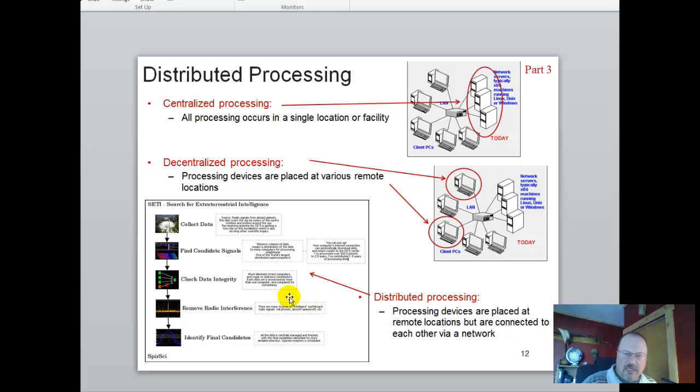Now, with distributed processing, the SETI program actually comes to mind. So distributed processing is where processing devices are placed at remote locations but are connected to each other via a network. So this doesn't, decentralized doesn't have to be through a network. It often is, but it doesn't have to be.